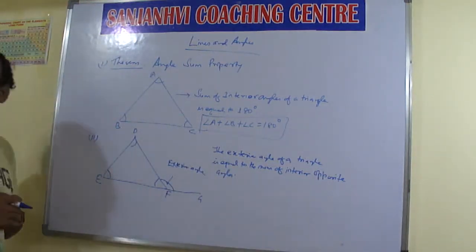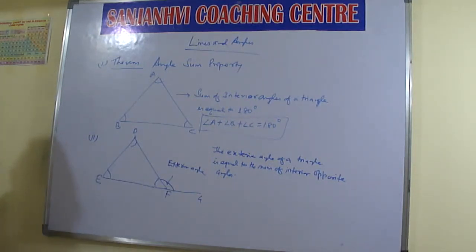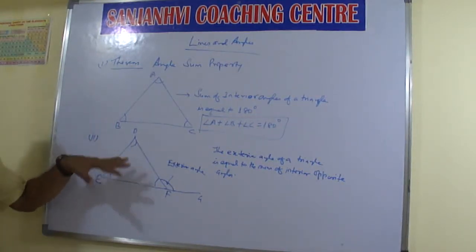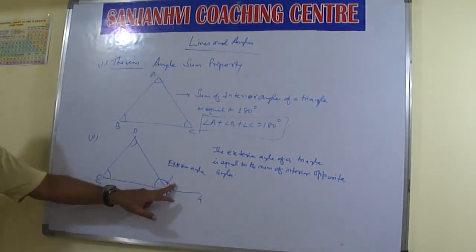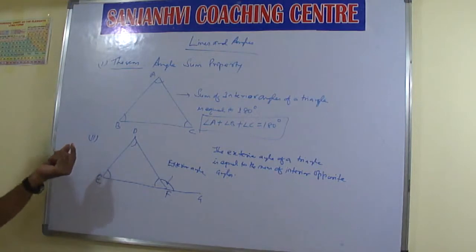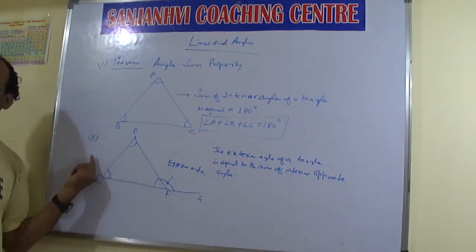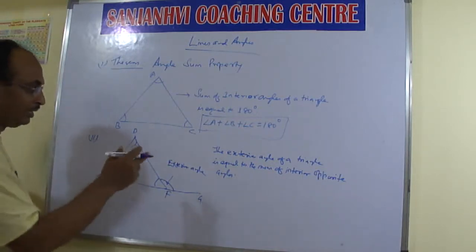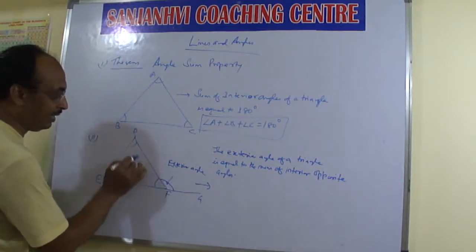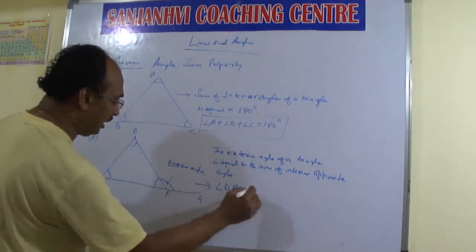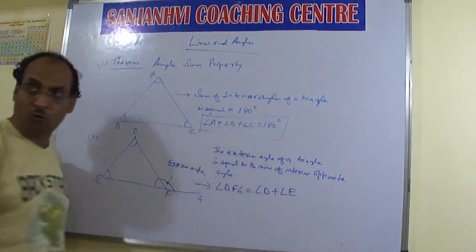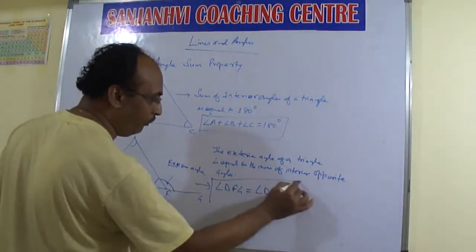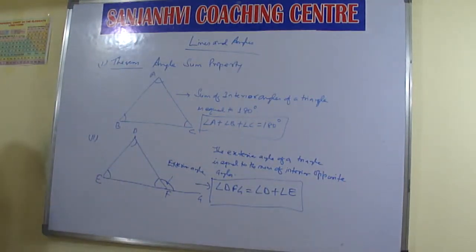How many interior opposite angles are there? There are two interior opposite angles. The interior opposite angles to this exterior angle are two only. Therefore, by utilizing this property, we can write that angle DFG is equal to angle D plus angle E. These two properties will be used to solve questions in exercise 6.3.